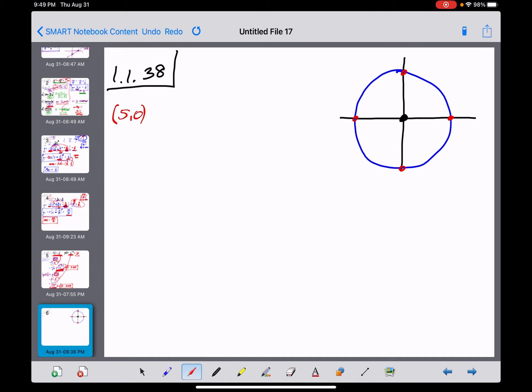So what do we have there? We've got (5,0), (0,5), (-5,0), and then (0,-5).